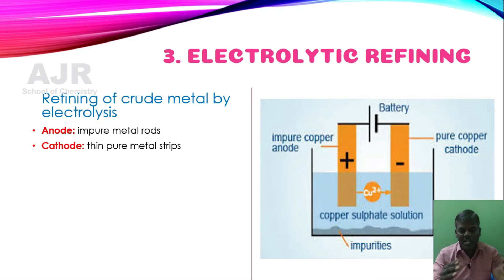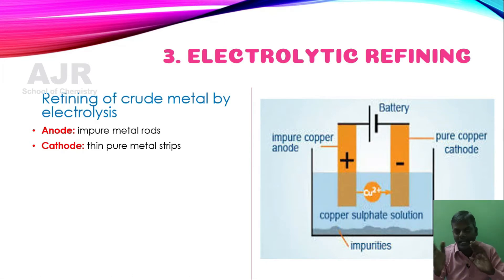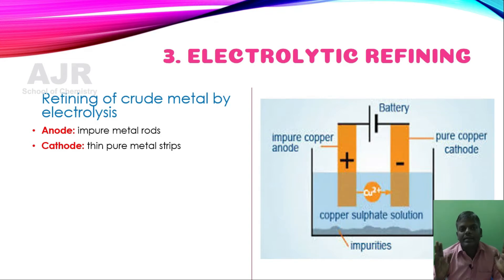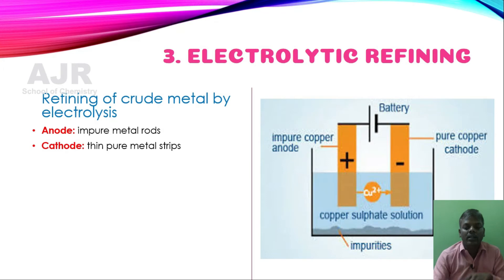An electrolytic cell contains an anode, a cathode, and an electrolyte. So the electrolytic cell is a combination of anode, cathode, and electrolyte.